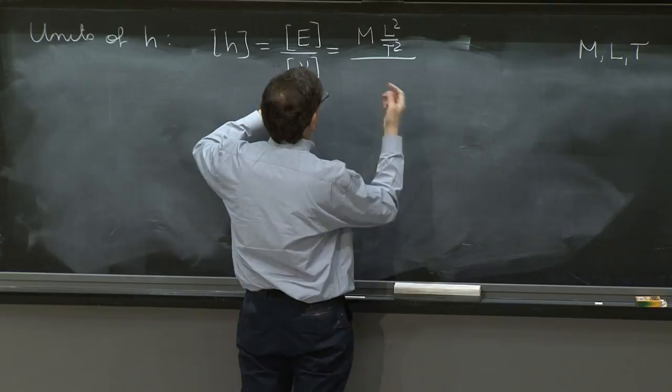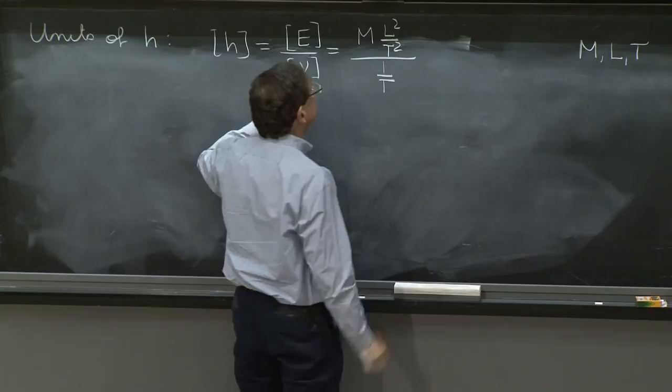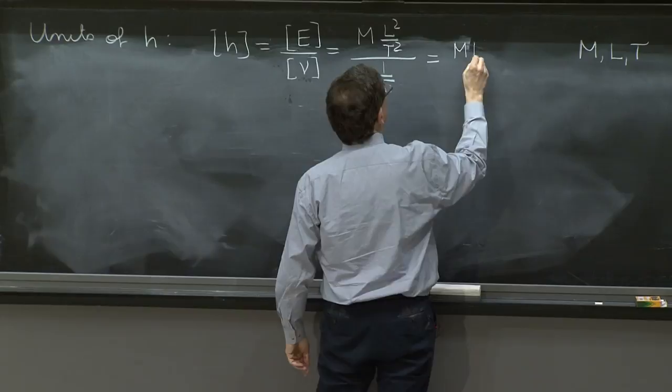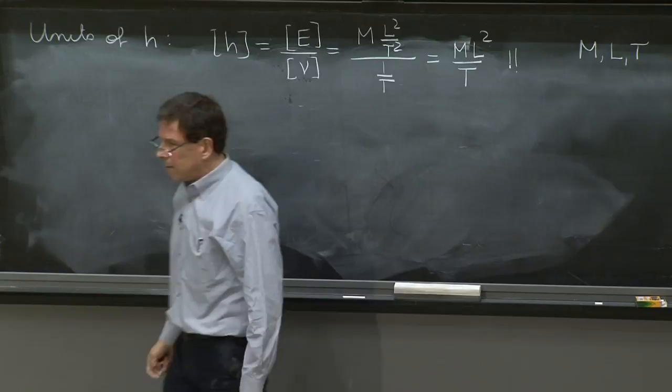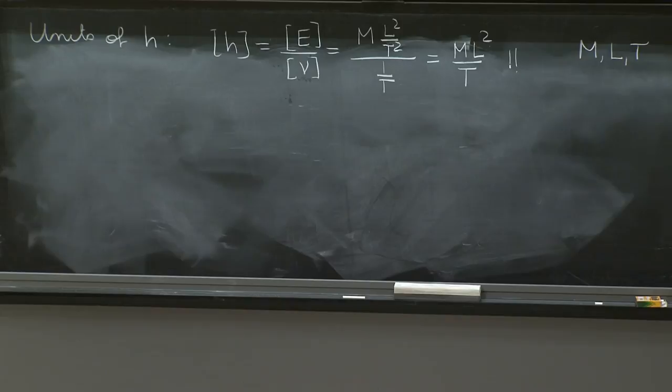Frequency is cycles per unit time. Cycles have no units, so it's 1 over time here. So then you say that it's m l squared over t. So that's the first answer, and that's a nice answer, although it's never quite that useful in this way. So we try to rearrange it.